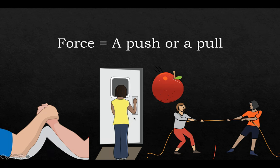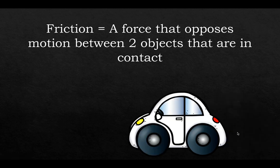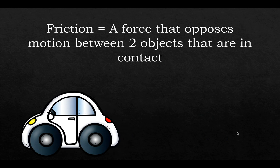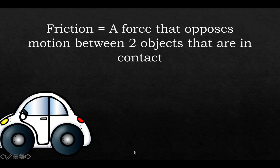We're not going to go through all the different types of forces, but two that are sometimes overlooked are friction and gravity. Friction is the force that opposes motion between two objects that are in contact. So if someone gives a toy car a push, friction is eventually going to cause that toy car to stop. Friction is the force between the tires and the ground, and it opposes the motion of the car.